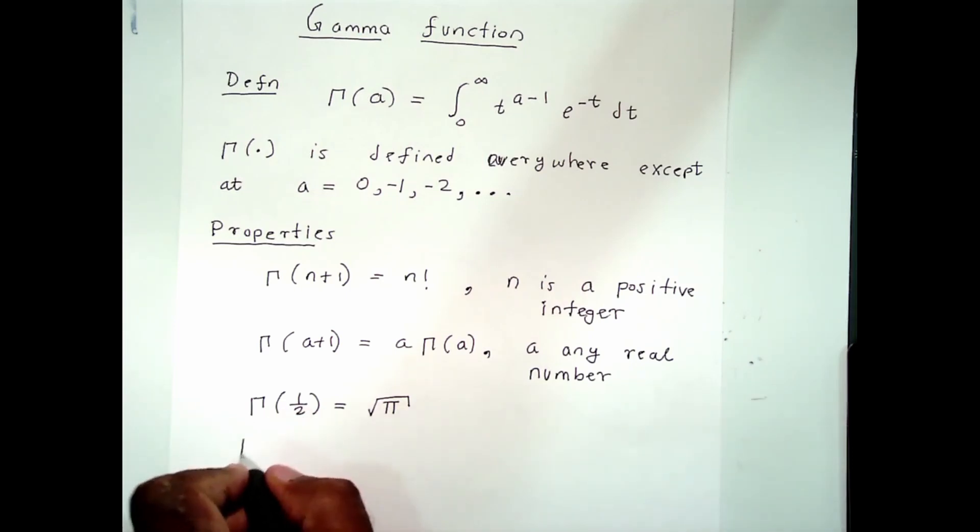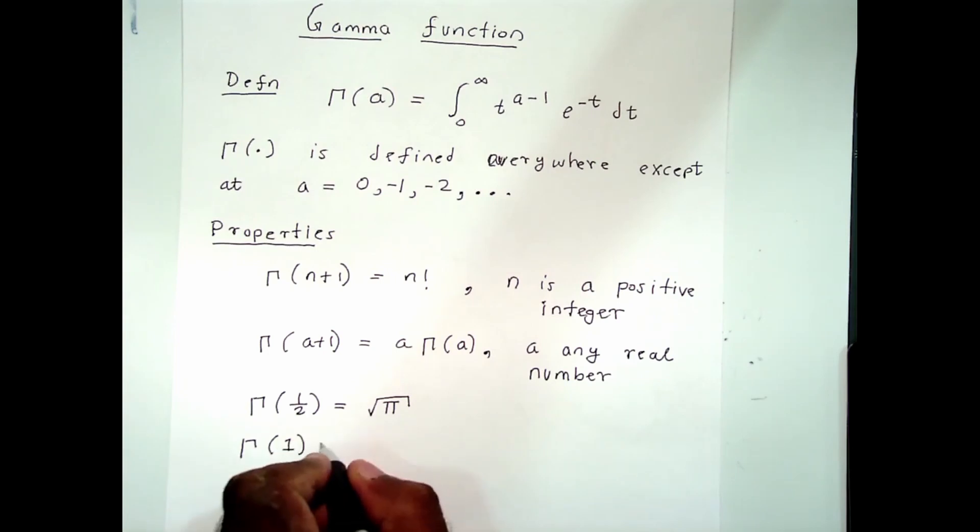These are some properties of the gamma function, and also gamma at 1 is equal to 1.